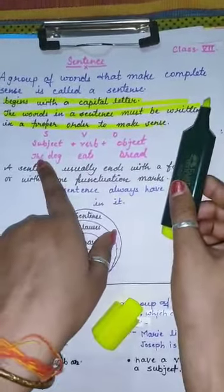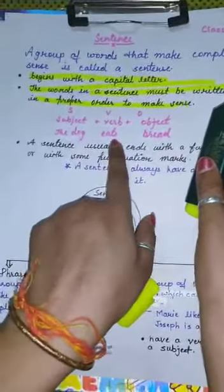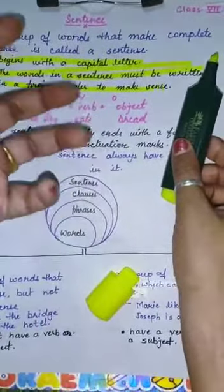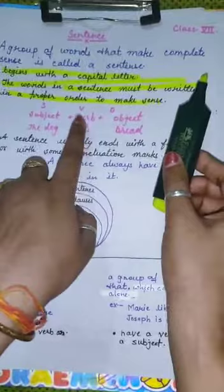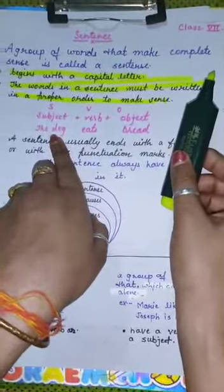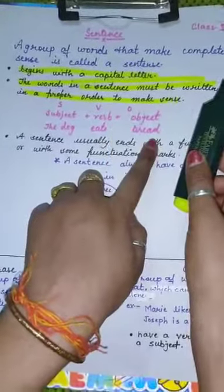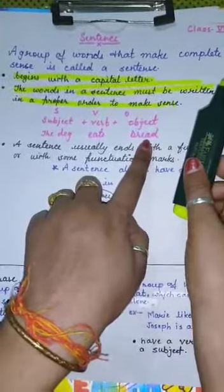So the example is the dog eats bread. Here, the dog is subject, means the doer, jo kaam ko kar raha hai. Eats is verb, what's the verb this doer is doing, and bread, the impact of that verb is receiving by this object.